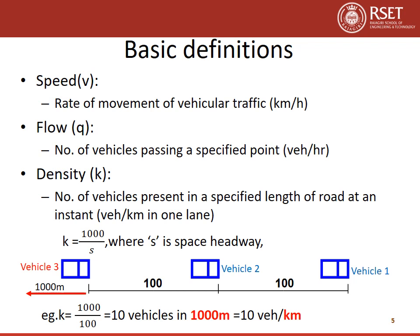In this figure, only 200 meters is marked. Vehicle 1 and Vehicle 2 are within this 200 meter stretch, while Vehicle 3 is outside. So in this case, if only 200 meters is considered, density equals 200 divided by 100, which equals 2 — meaning Vehicle 1 and Vehicle 2 are present in that 200 meter section.